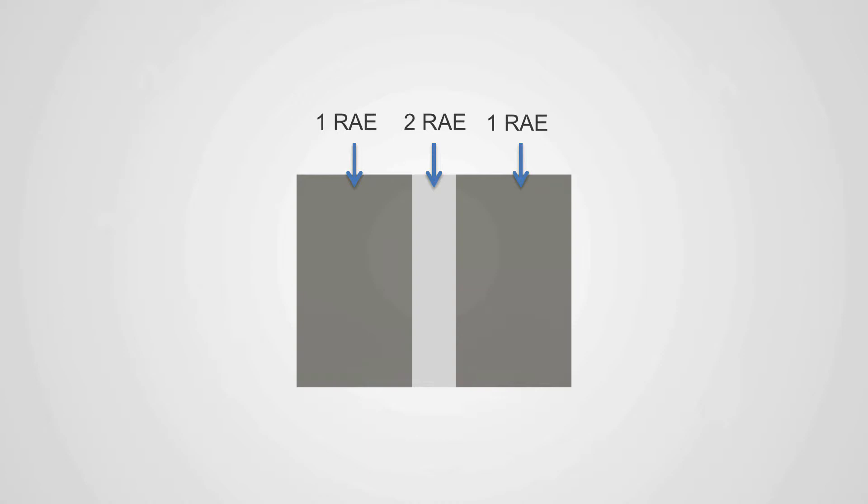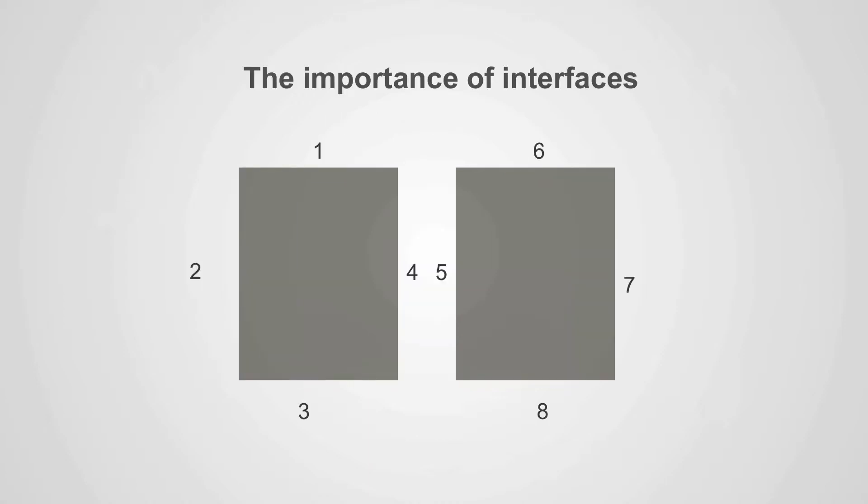When we separate the two rectangles again, we can again see them as separate structures because of the whiteness between them.